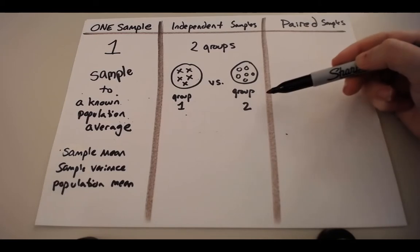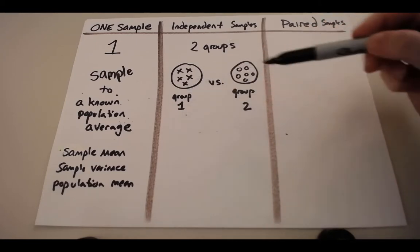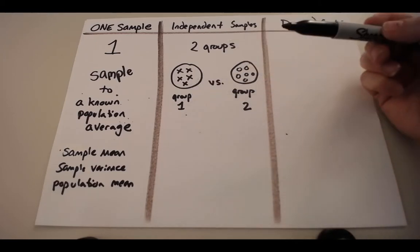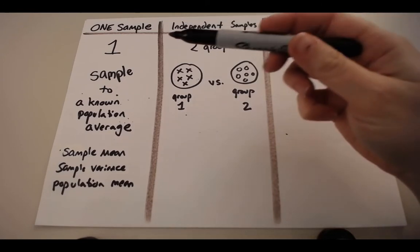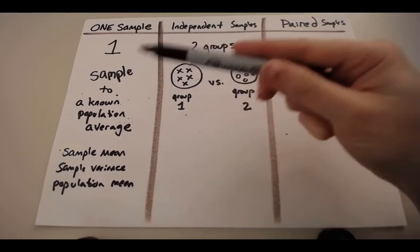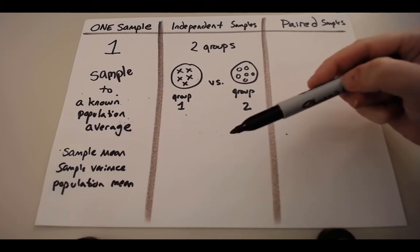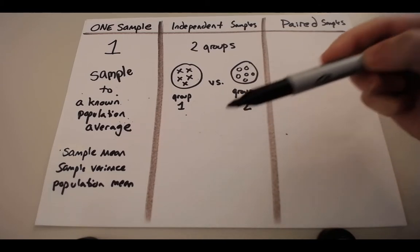But there's two groups, group one and group two. And we're trying to see, is there a difference between these two groups? We don't do anything about a population in our independent samples. It's all about what's in the samples.